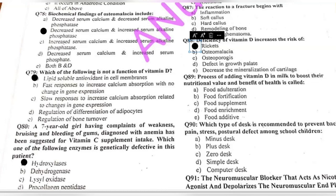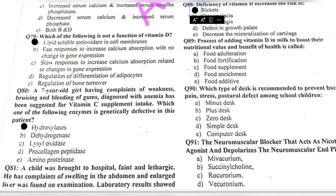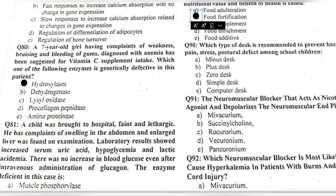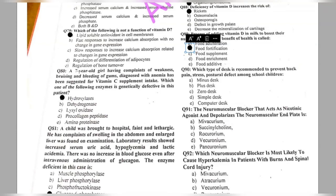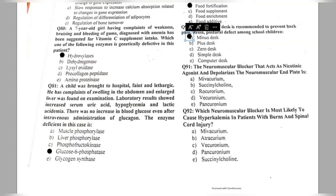Questions 88-89: deficiency of vitamin D increases the risk of — rickets, osteoporosis, defective growth plate, or decreased mineralization of cartilage? Rickets and osteomalacia are two forms of vitamin D deficiency. Adding vitamin D to food to boost nutritional value is called food fortification.